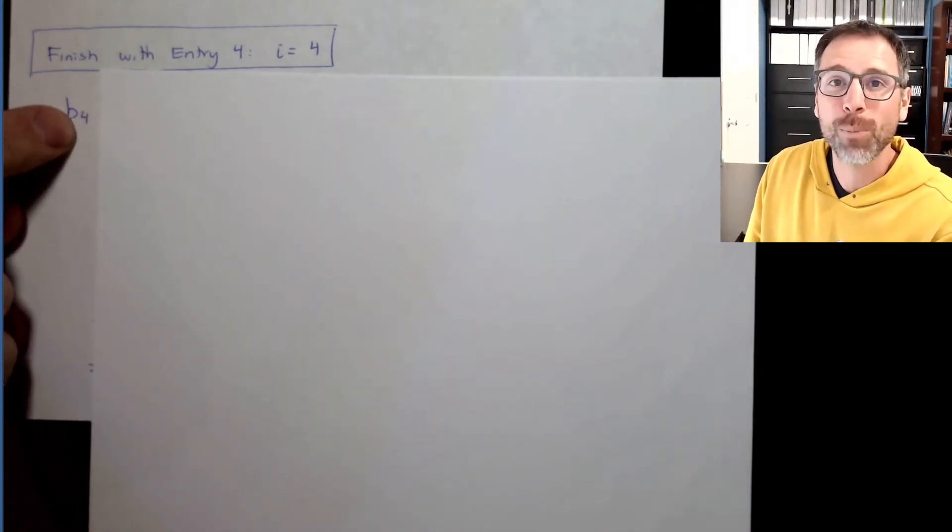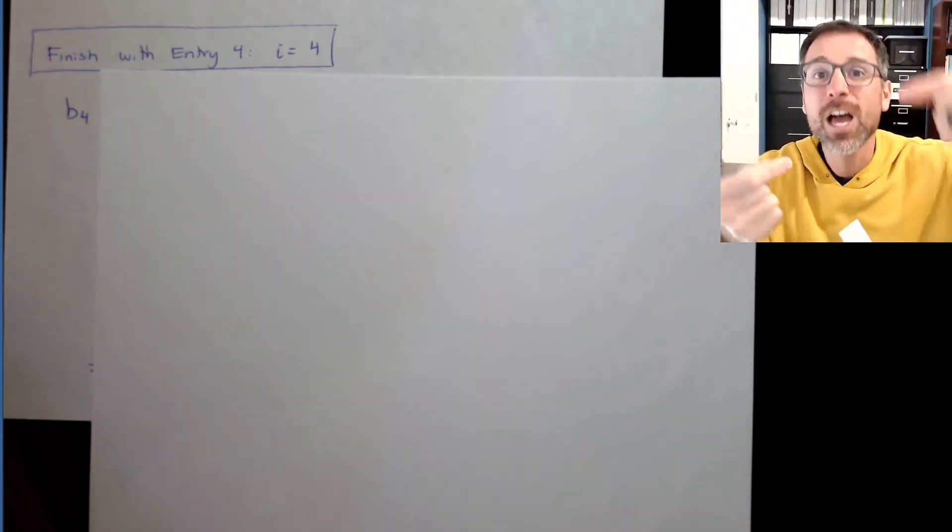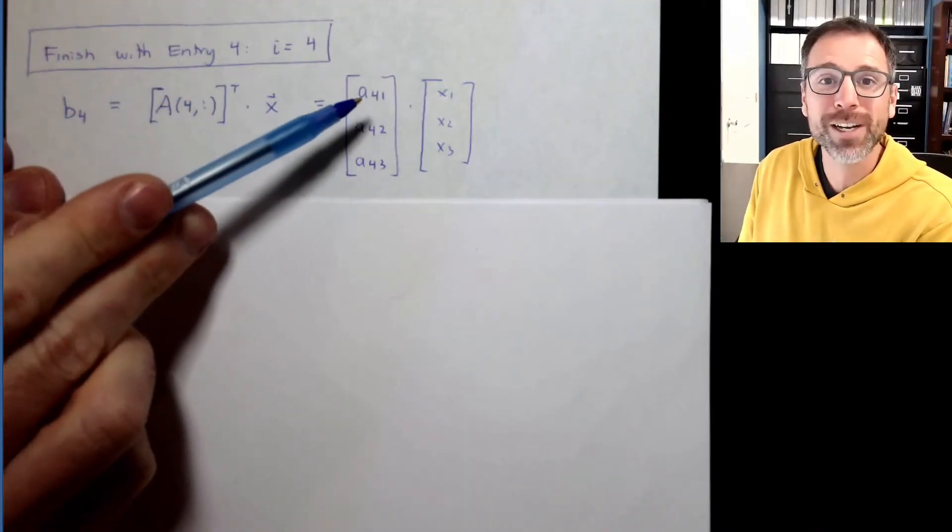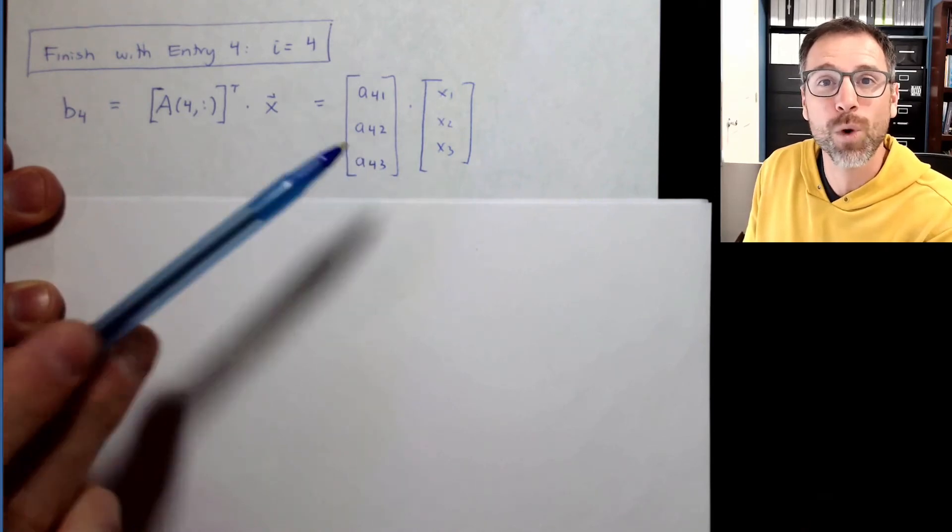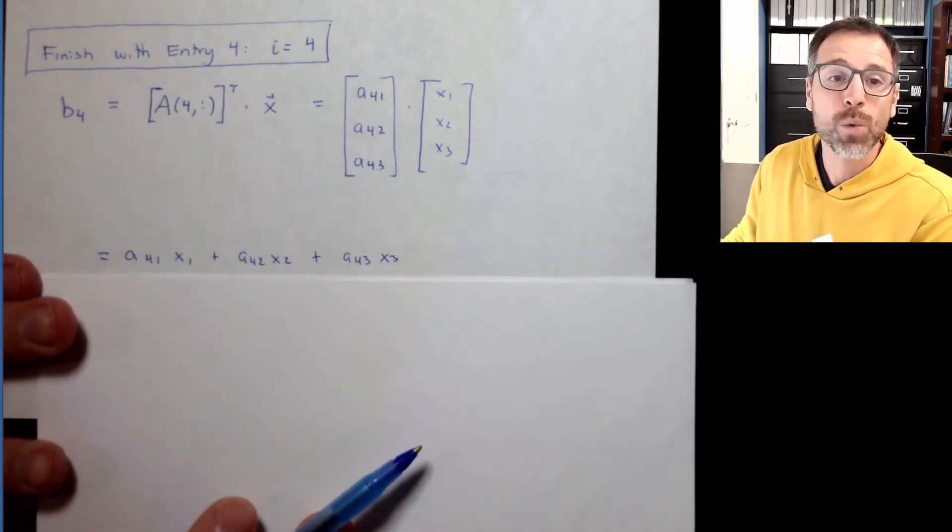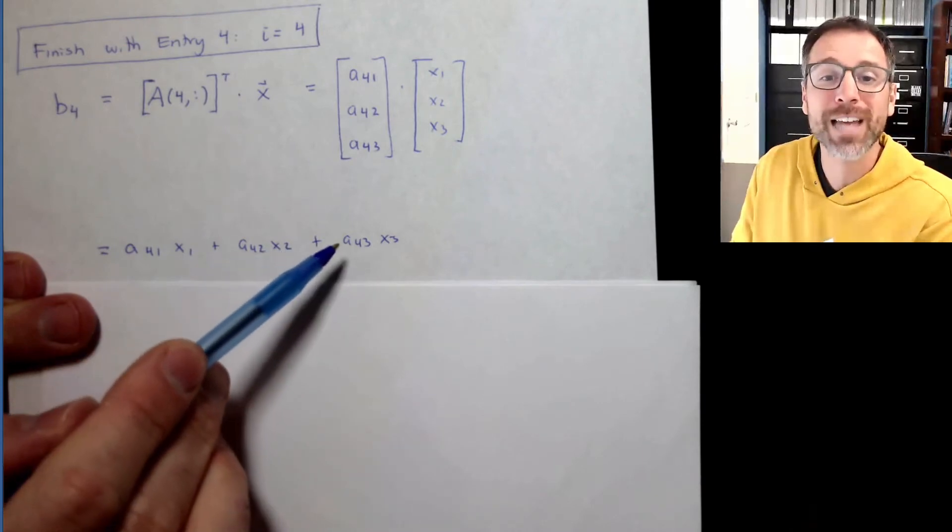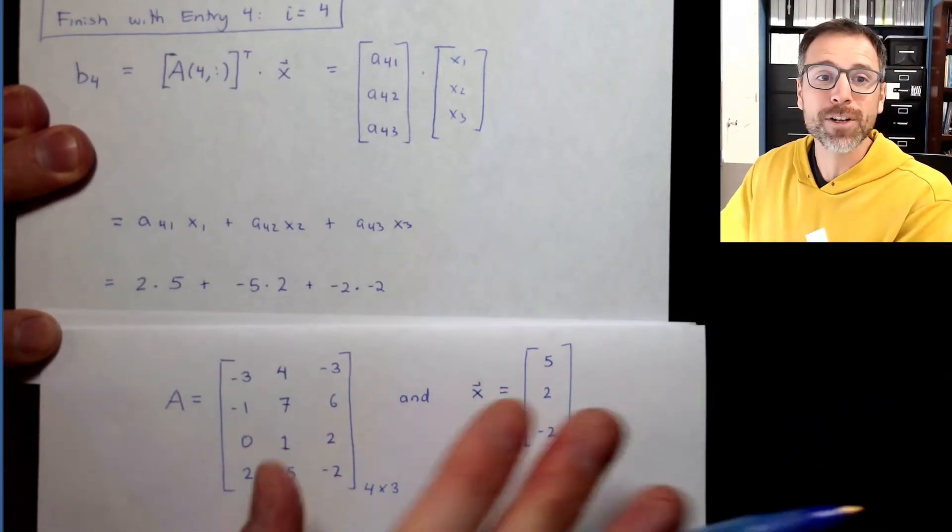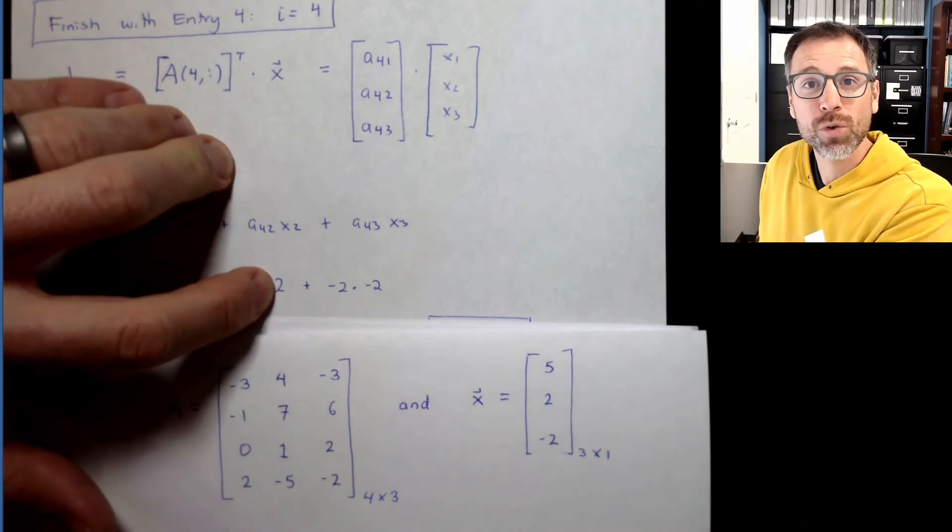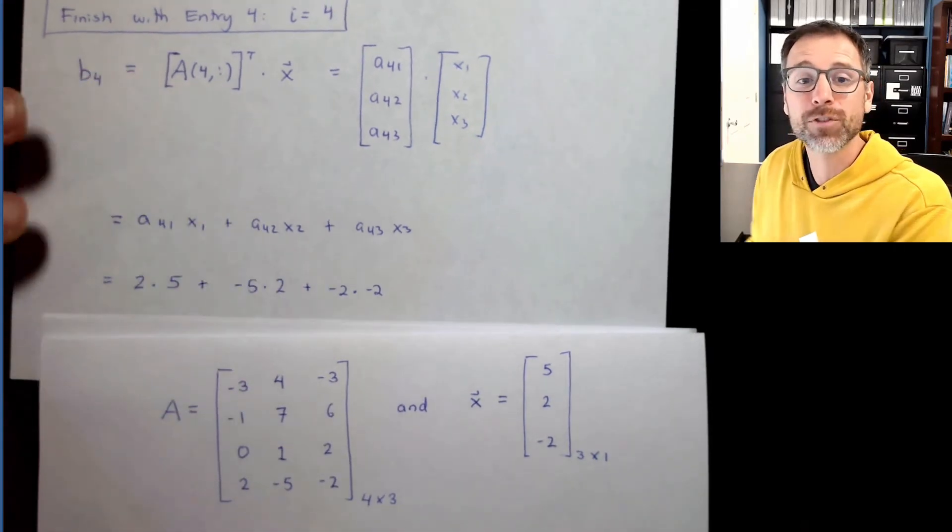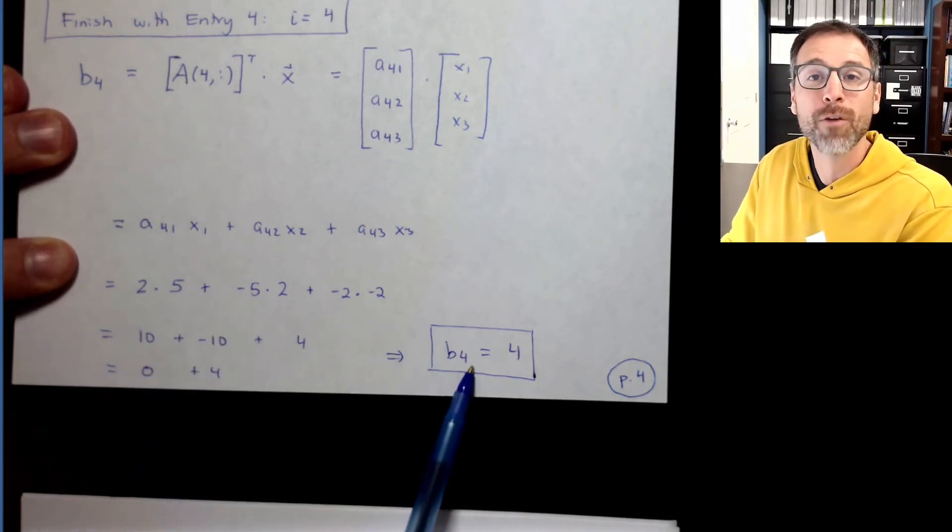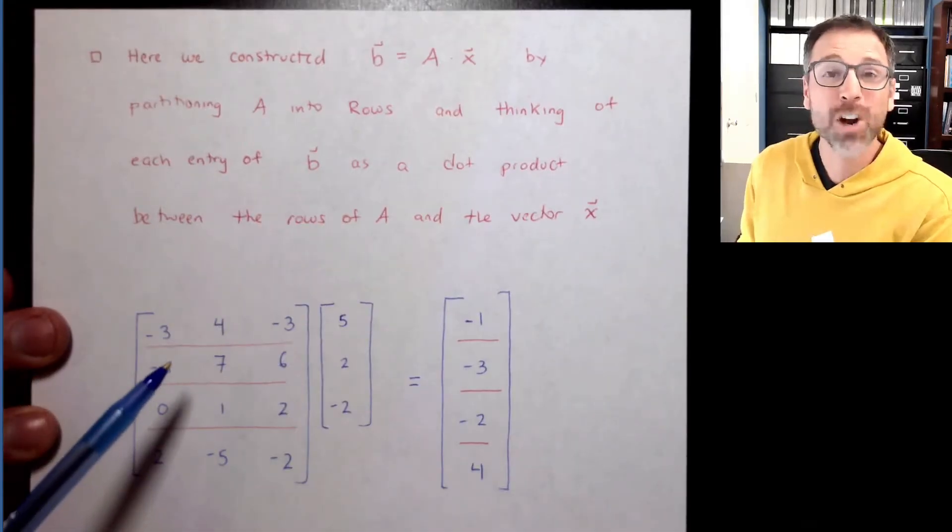Let's go ahead and do that. The fourth entry of our output vector, that's going to be the fourth row of A treated as a column vector using the transpose, dotted with the vector X. The fourth row of our matrix is 1 by 3, so when I take the transpose, it's 3 by 1. A_41, A_42, A_43 dotted with X gives us A_41 X_1 plus A_42 X_2 plus A_43 X_3. We do a quick recall on the individual entries. A_41 is 2, X_1 is 5, A_42 is negative 5, X_2 is 2, A_43 is negative 2, X_3 is negative 2. When we do those calculations, we get 10 minus 10 plus 4. 10 minus 10 is 0, when we add 4 to that, the fourth entry must be 4.